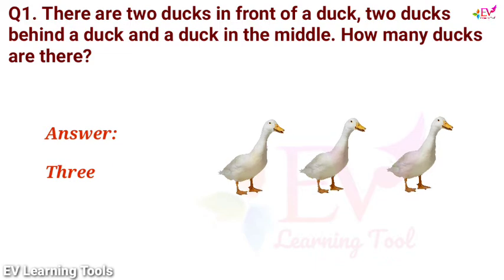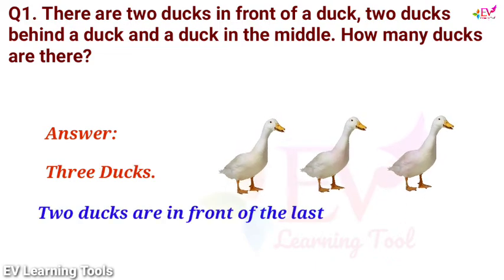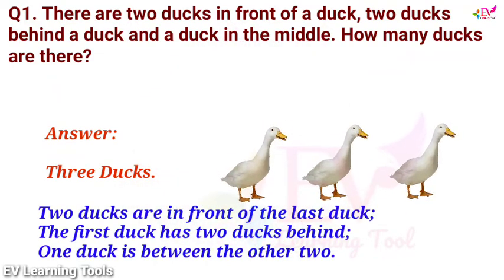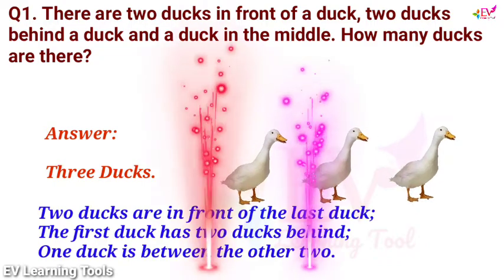Answer is three ducks. Two ducks are in front of the last duck. The first duck has two ducks behind. One duck is between the other two.